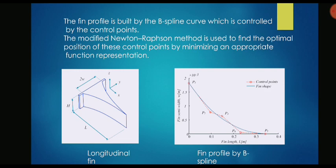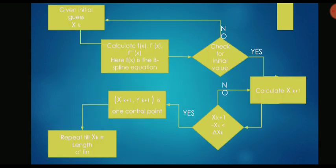Suppose for a given length of the fin say 0.1 meters, I am going to take any initial guess of the position of the control point, any x coordinate and any y coordinate. I will put it through this flowchart. I will check whether the initial guess is correct or not.